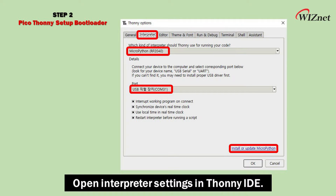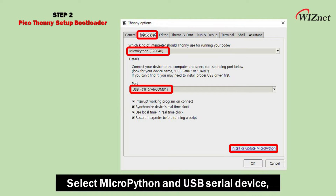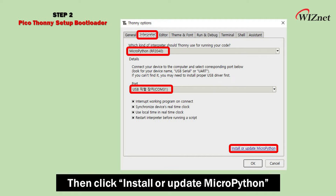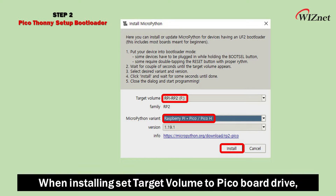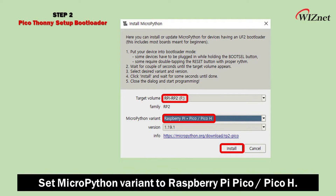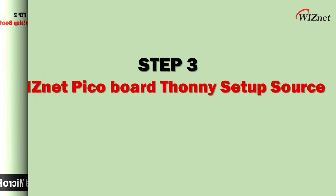After entering boot mode, open interpreter settings in Thonny IDE. Select MicroPython and USB Serial device, then click Install or Update MicroPython. When installing, set target volume to PicoBoard drive and set MicroPython variant to Raspberry Pi Pico or PicoH.